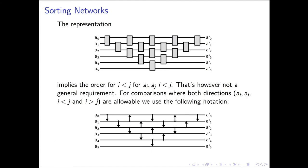Let's extend this definition slightly. So far we assumed comparators sort top-to-bottom, with the minimum at the top output and the maximum at the bottom. This is not a necessity. We introduce a directional arrow notation: when the arrow points down, the minimum is at the top and the maximum at the bottom; when the arrow points up, the maximum goes to the top and the minimum to the bottom. We'll need this for the bitonic sort algorithm, which requires comparators that can sort into either ascending or descending order.